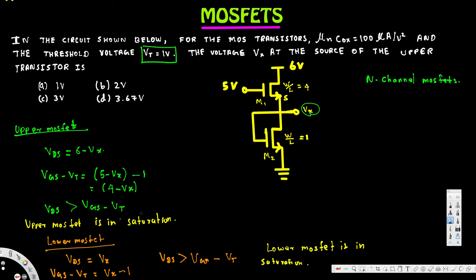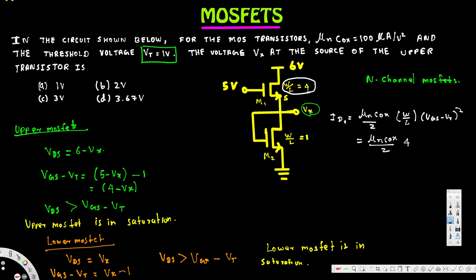Since both MOSFETs are in saturation, we use the saturation drain current equation: ID = (μnCox / 2) × (W/L) × (VGS minus Vt)². For the upper MOSFET, W/L equals 4, and VGS minus Vt is 4 minus Vx, so ID1 equals (μnCox / 2) × 4 × (4 minus Vx) squared.